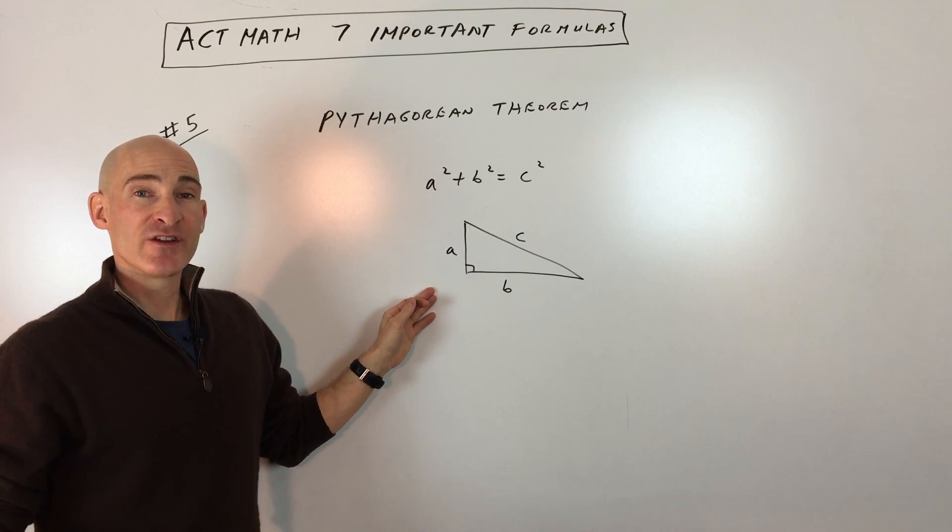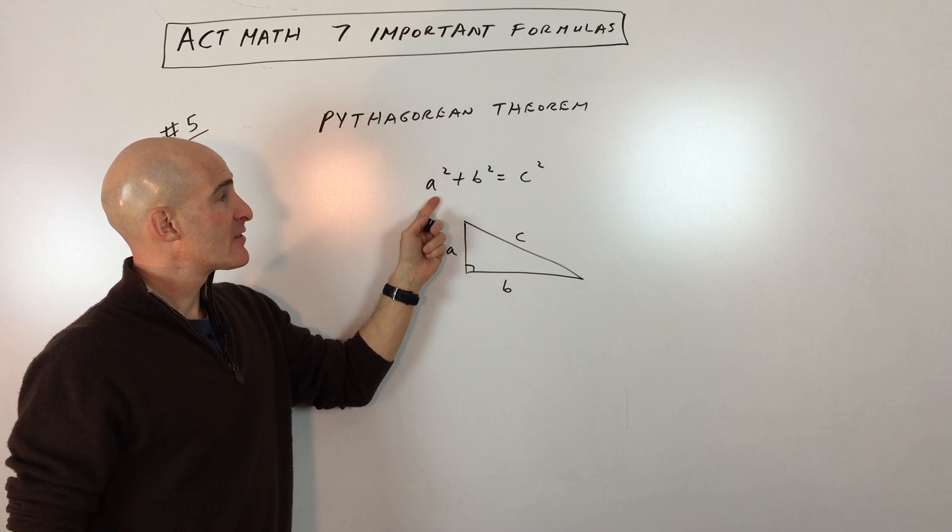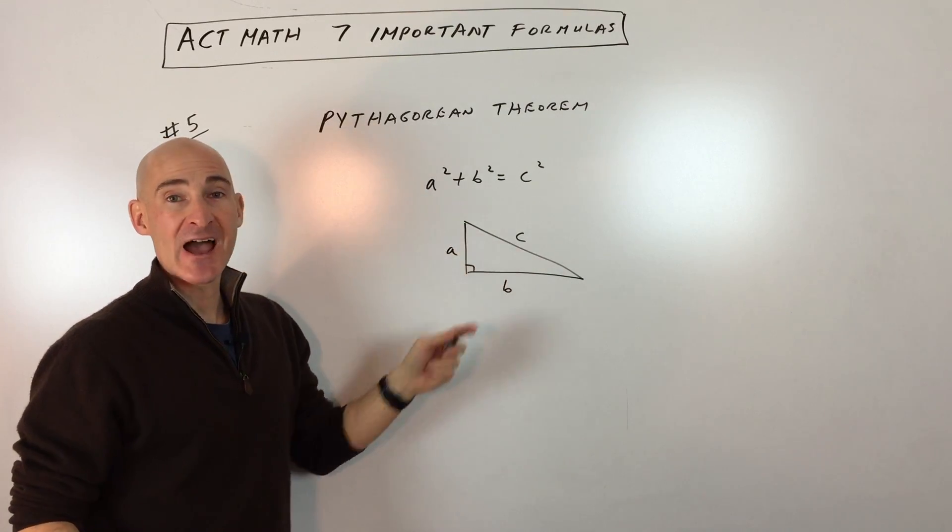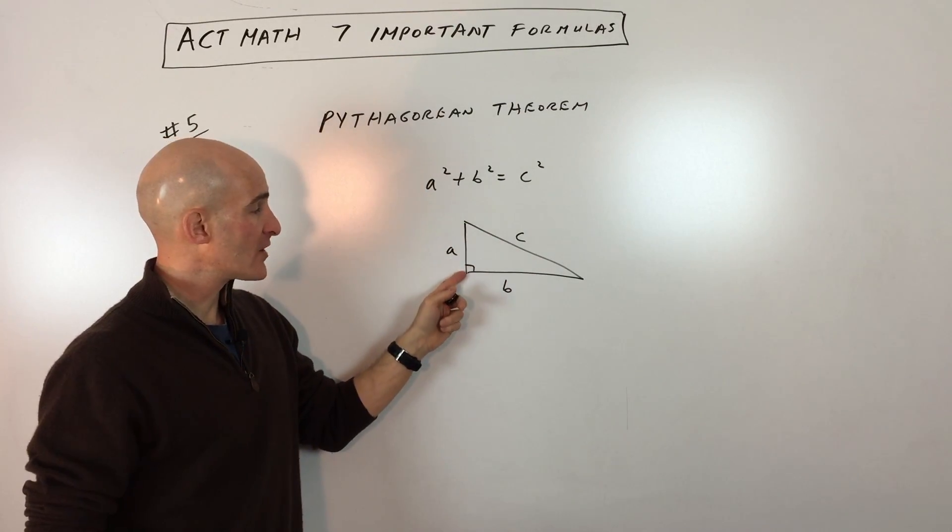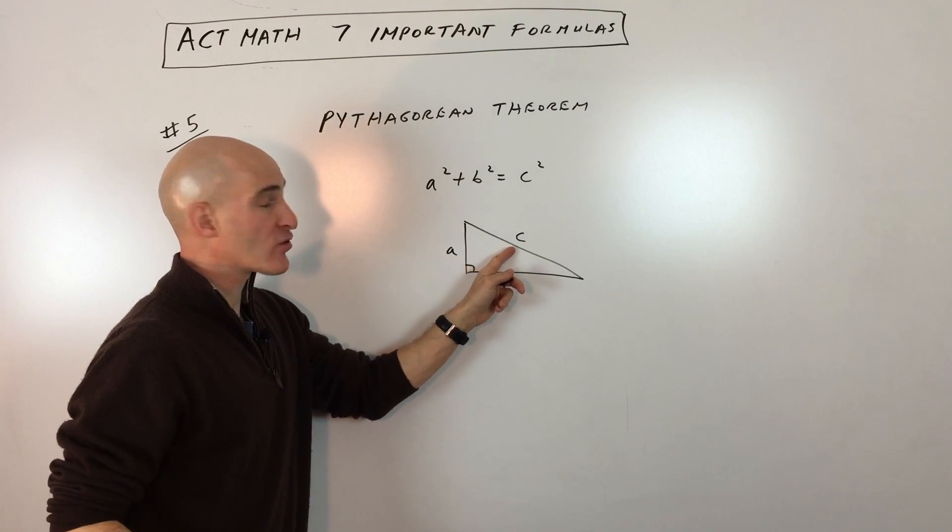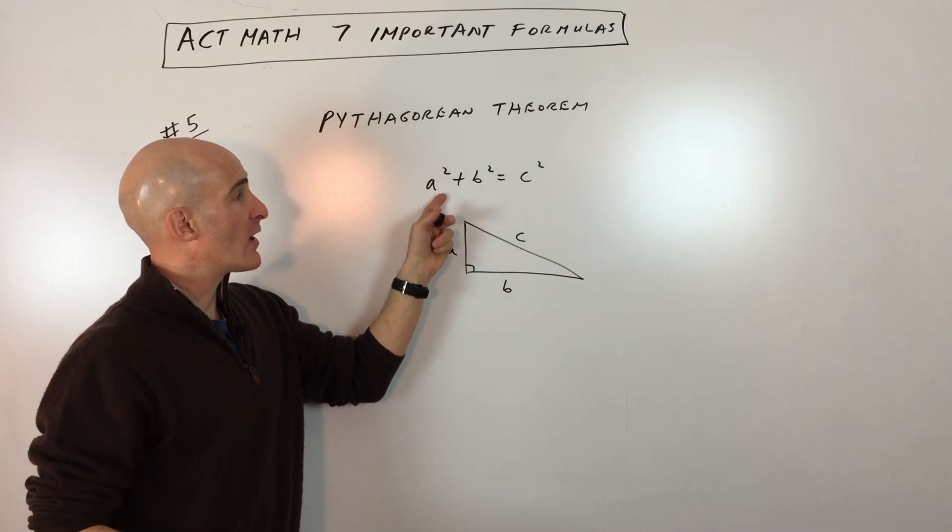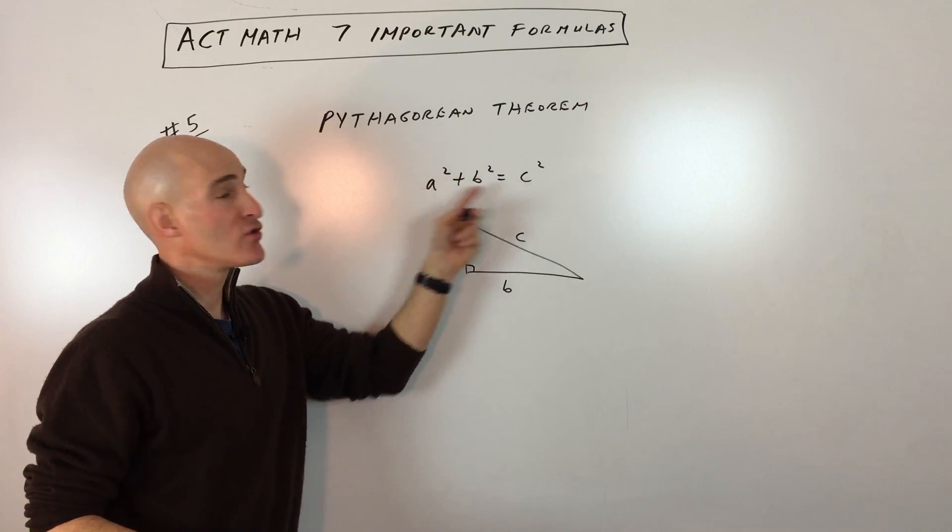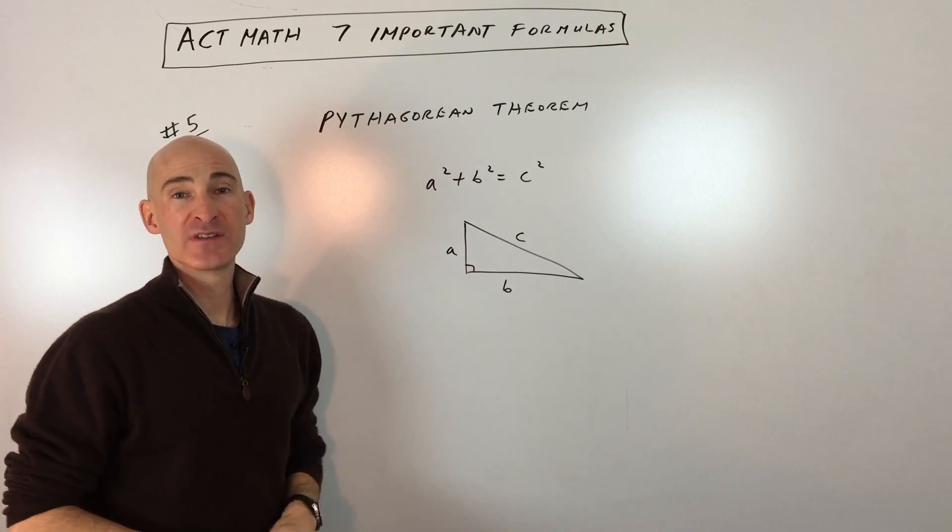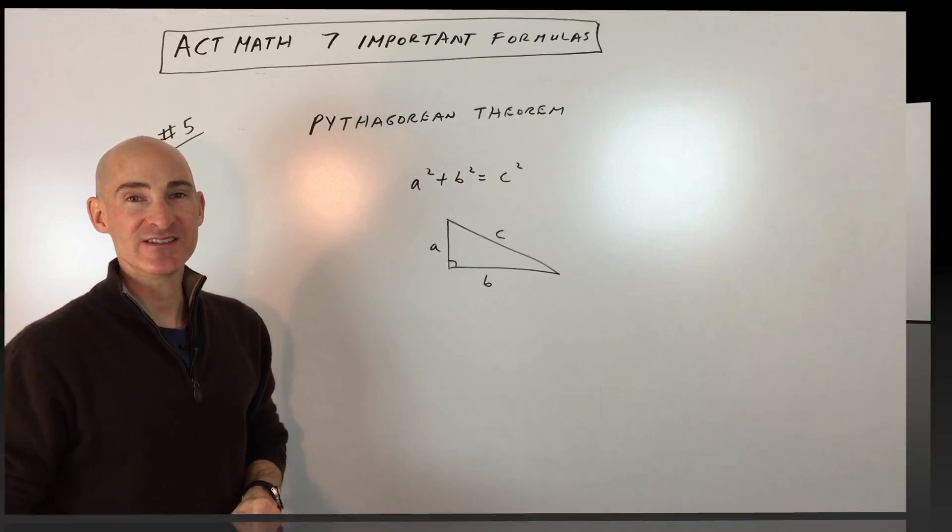The fifth formula that we're looking at here for the math section of ACT is the Pythagorean theorem. And the Pythagorean theorem just helps us to find the missing side in a right triangle. So if you have a right triangle like this and the two legs are the A and the B sides, the one that's across from the right angle, that's the hypotenuse. That's called the C side. And as long as you know A squared plus B squared equals C squared, you can solve for any one of the missing sides in a right triangle. So Pythagorean theorem, another good one to know for the math section of the ACT.